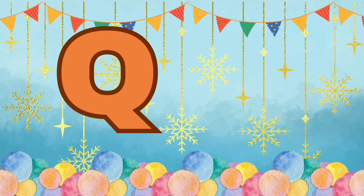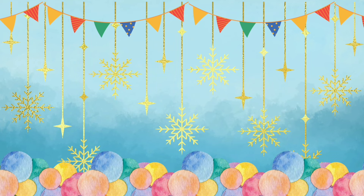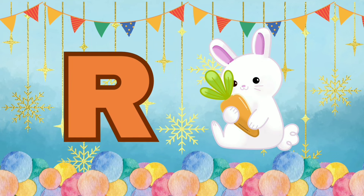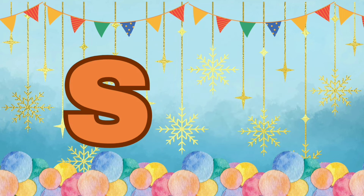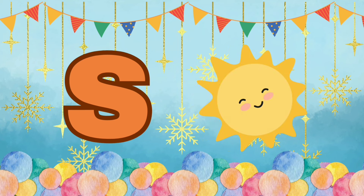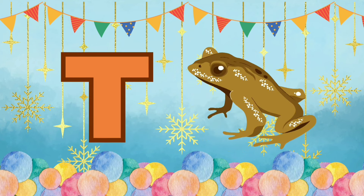Q is for Queen, Q-Q-Queen. R is for Rabbit, R-R-Rabbit. S is for Sun, S-S-Sun. T is for Toad, T-T-Toad.